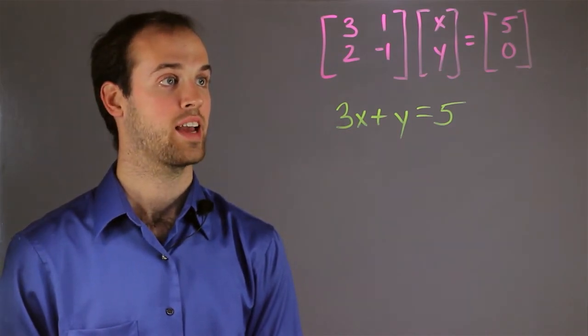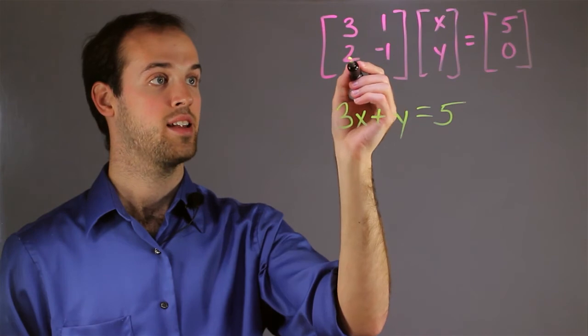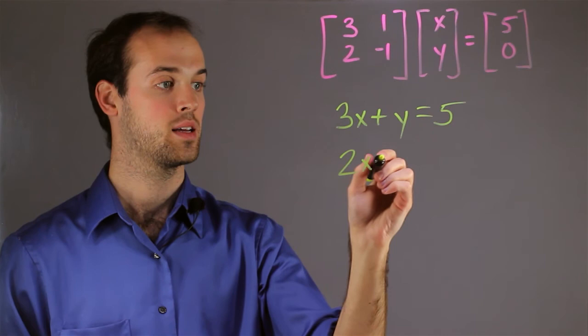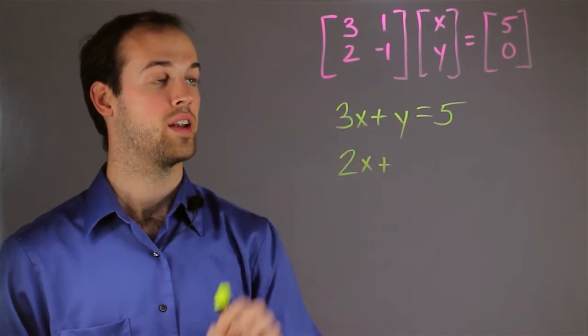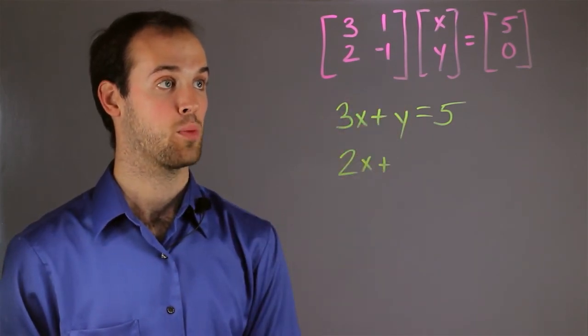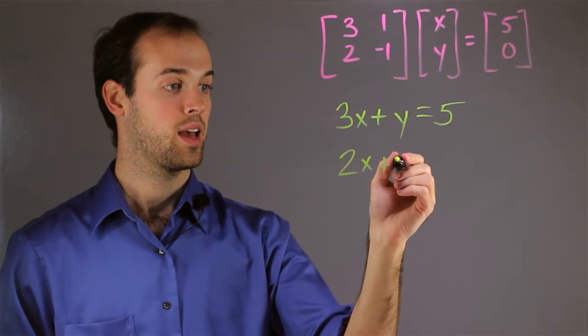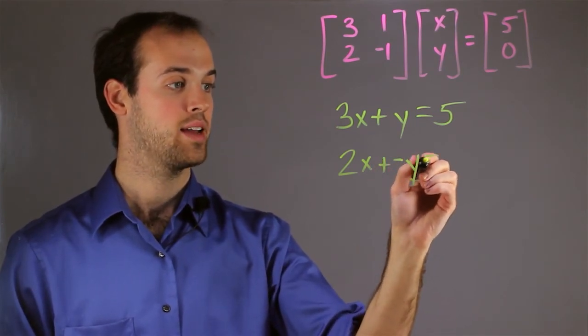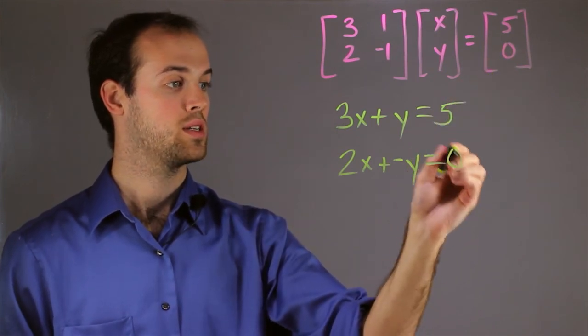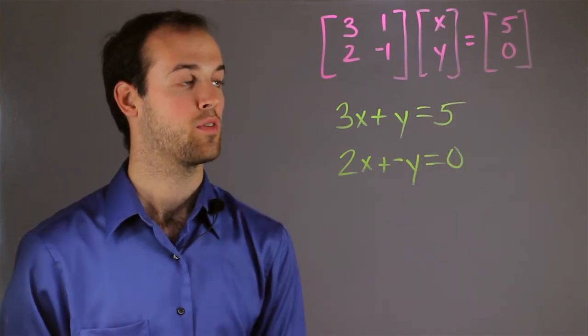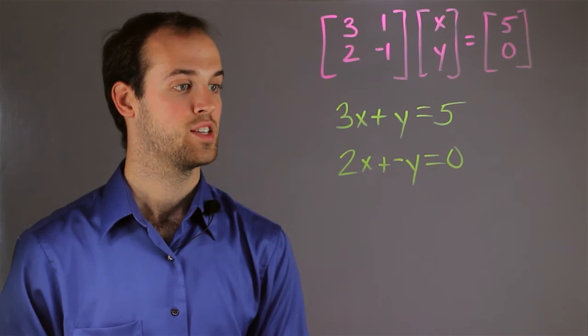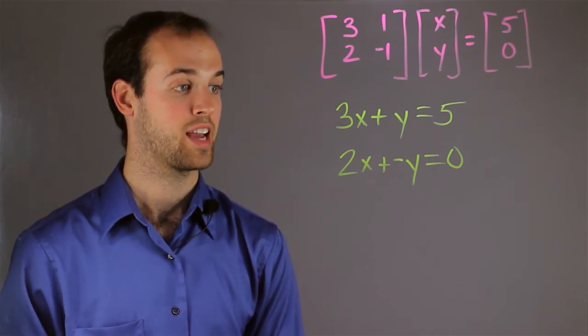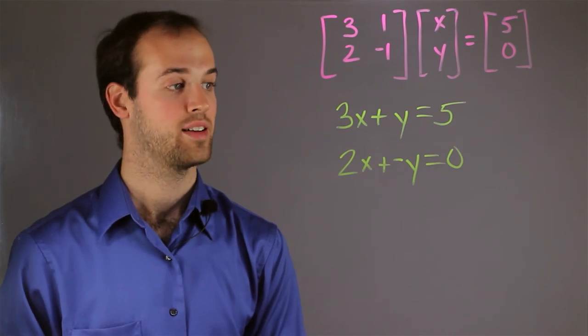And now let's do our second equation, which again, this 2 is going to correspond to our A term, so it's going to be 2x. This negative 1 corresponds to our B term, or our y term. And again, I don't have to write the 1, so I can just say plus negative y, and it's going to be equal to 0, which is our C term for our second line. So now we have, for our second line, 2x plus negative y, or just minus y, equals 0.